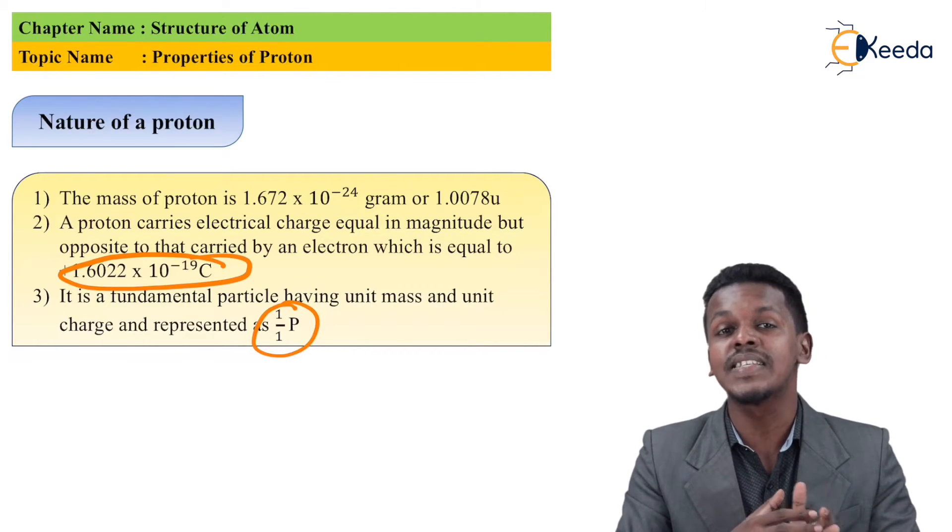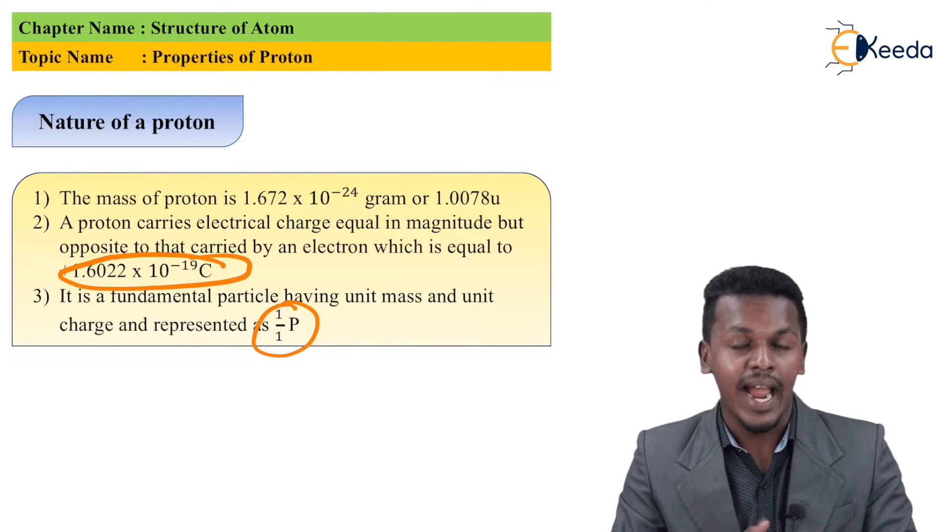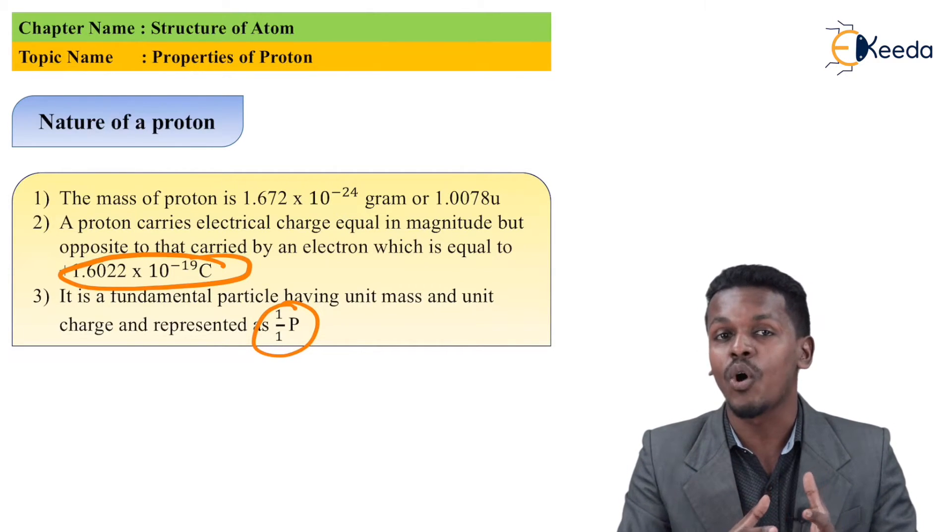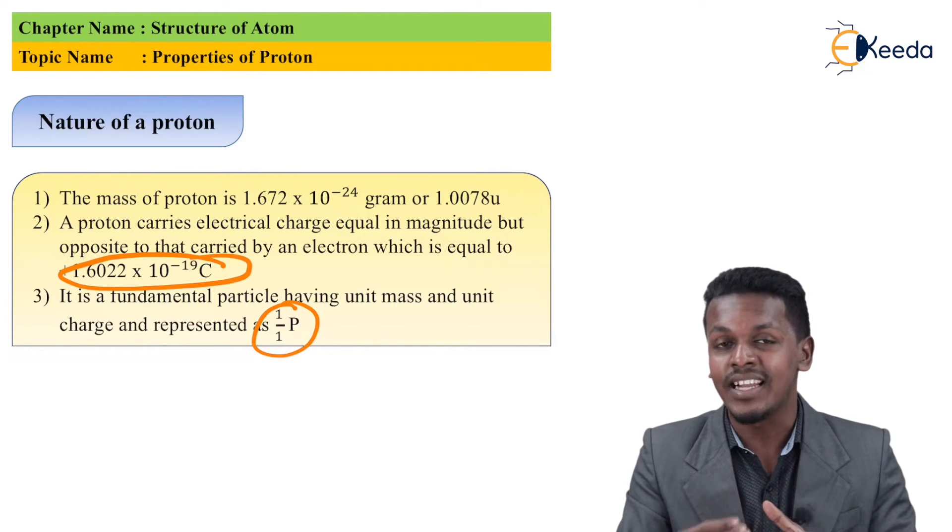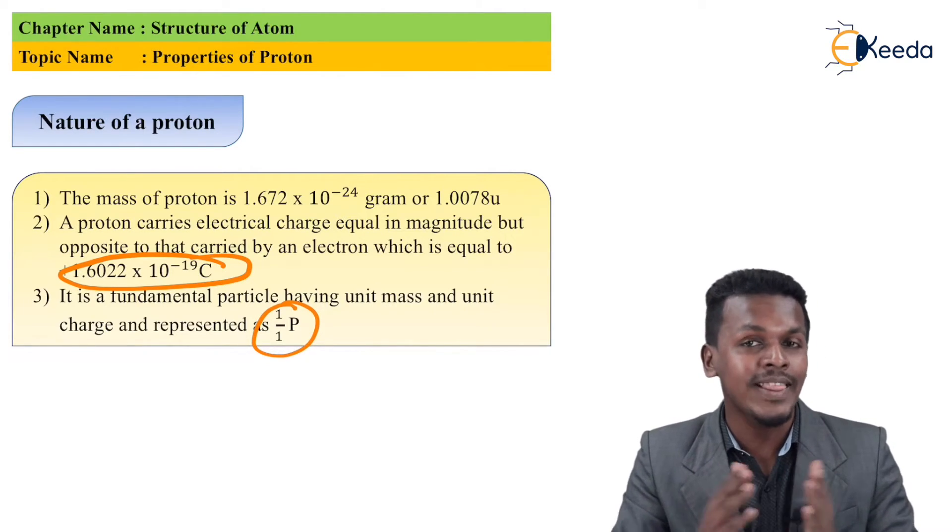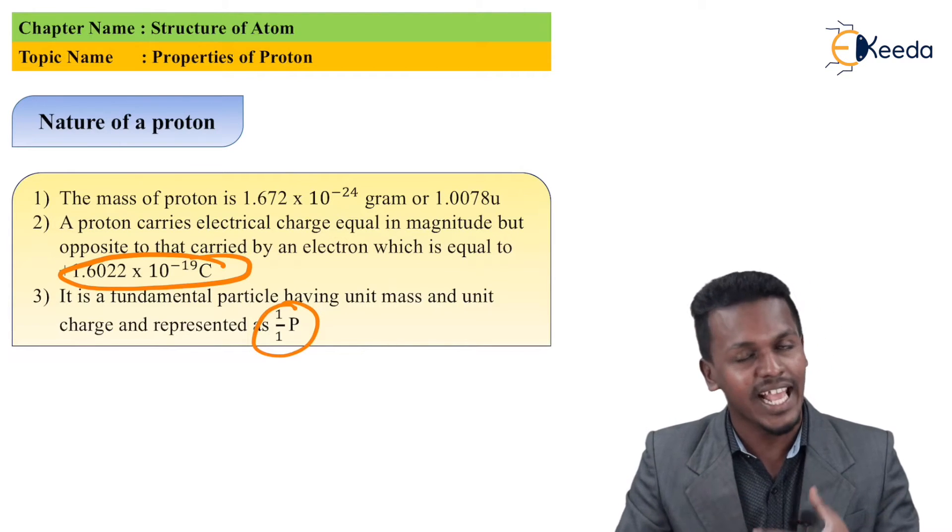If we discuss hydrogen, it consists of one proton but doesn't have a neutron. That's why we can consider that all atoms consist of protons as well as electrons.